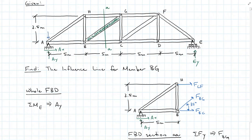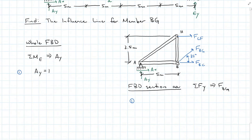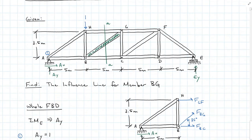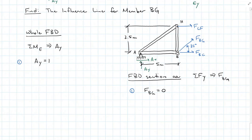When I apply the unit load at A, pin A_Y is taking up all the load, so force BG is going to equal zero. Moving the unit load to H and summing moments about E, I find that A_Y is equal to 0.75, and force BG is equal to 0.436 in three significant digits.